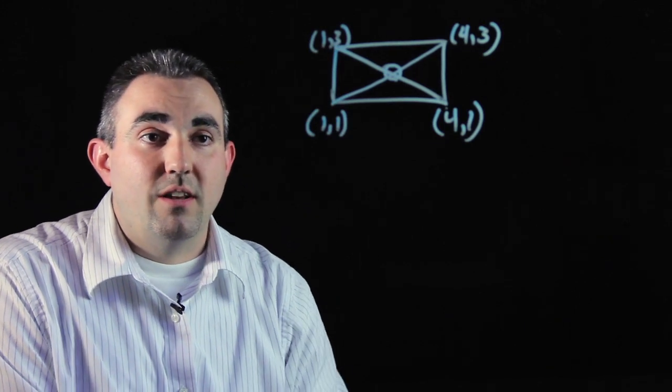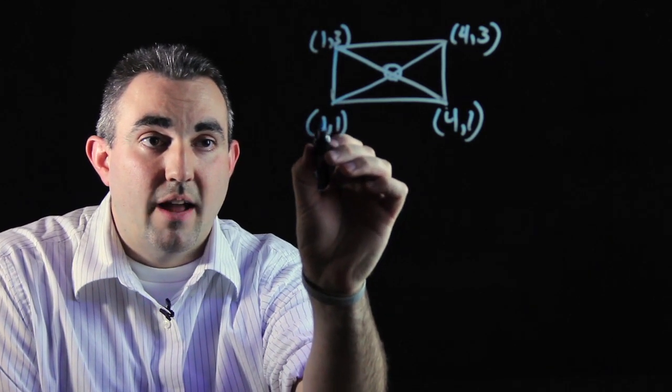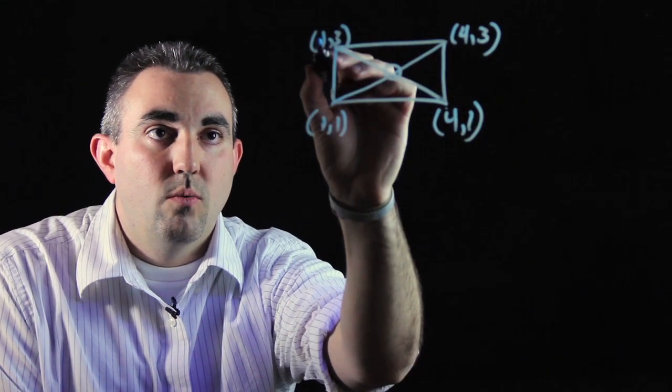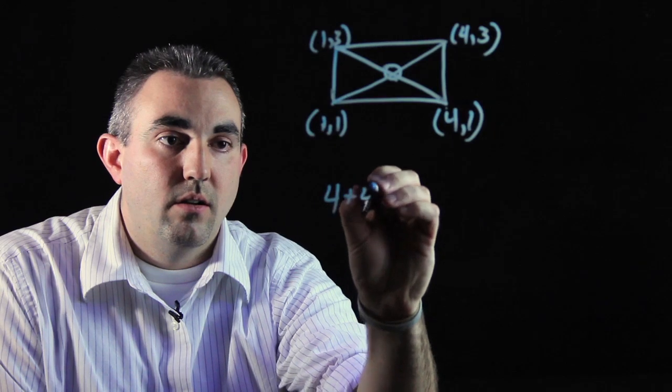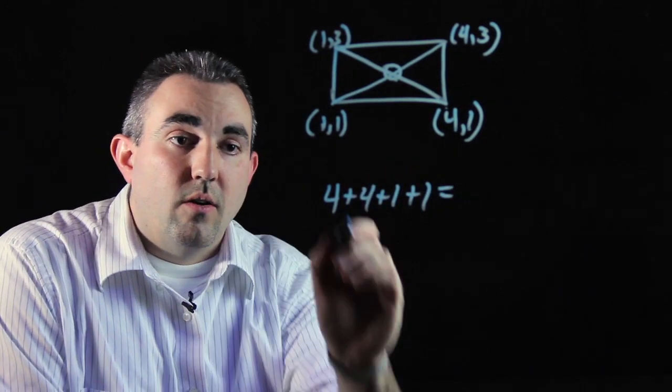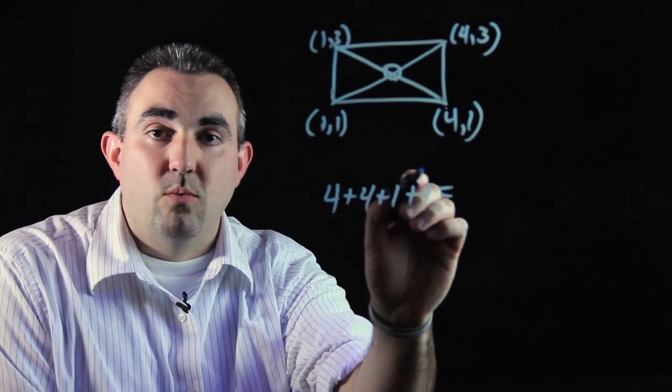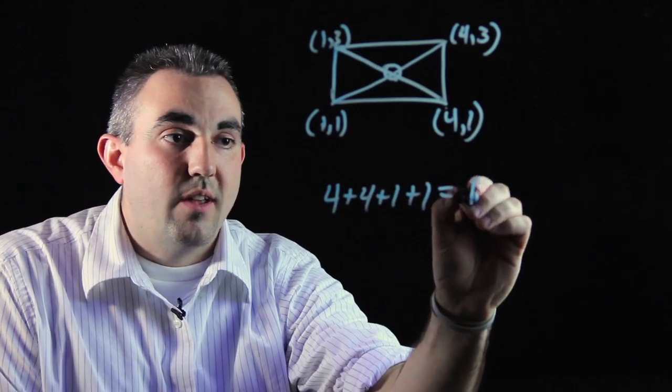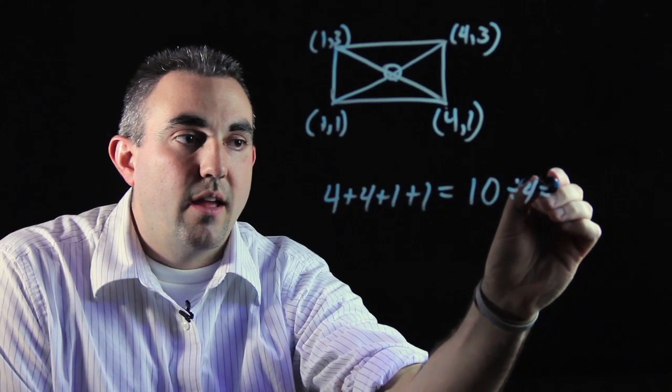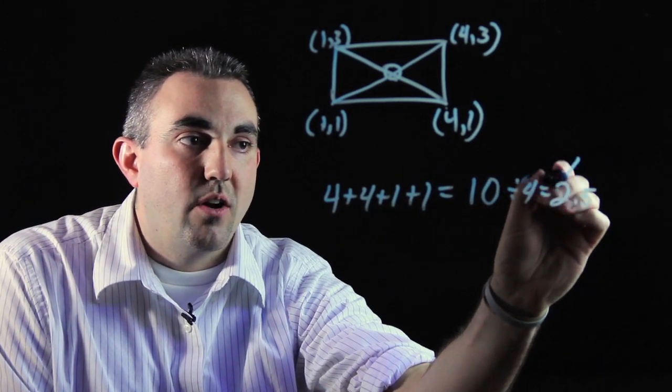In order to do this, you need to take from your ordered pairs all of your x's—so four, four, one, and one—and add them together. Four plus four is eight, plus one plus one gives you ten. Take that answer and divide it by four and you get 2.5 for your x.